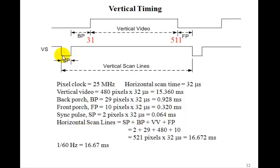And the sync pulse will take 2 pixels, each 32 microseconds, that's 0.047 milliseconds. And if you add these all up, you see you'll have a total of 521 pixels, which gives us our 16.67 milliseconds, which is our sixtieth of a second. So that's how we calculate what parameters we need for both the horizontal sync and the vertical sync and the various timings.